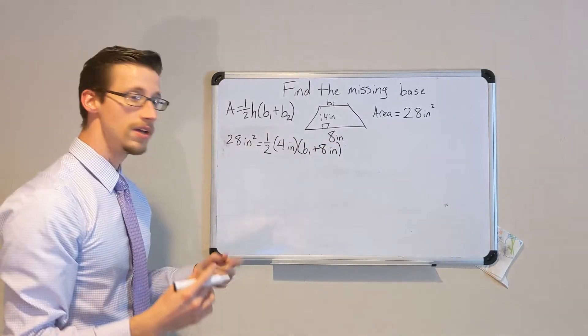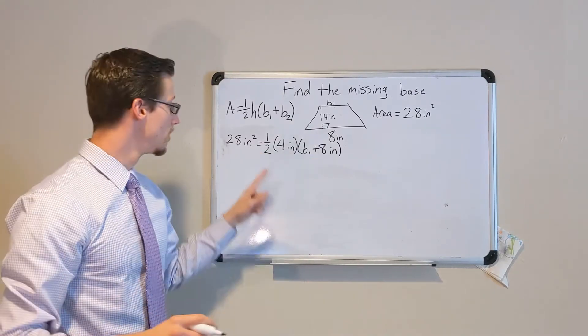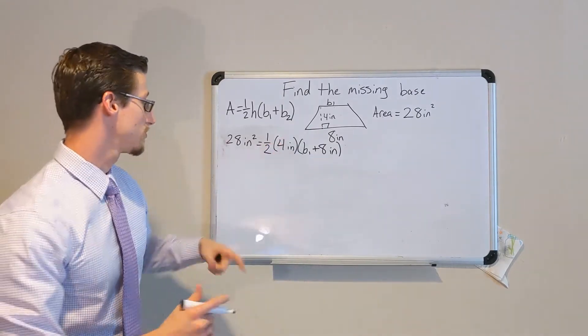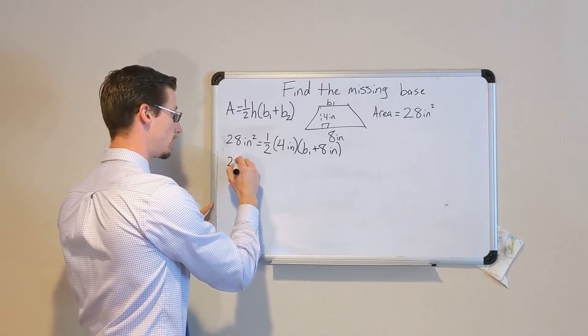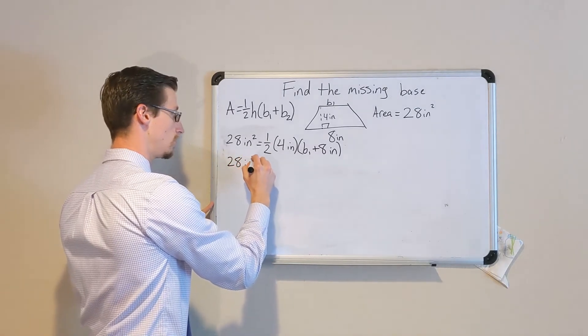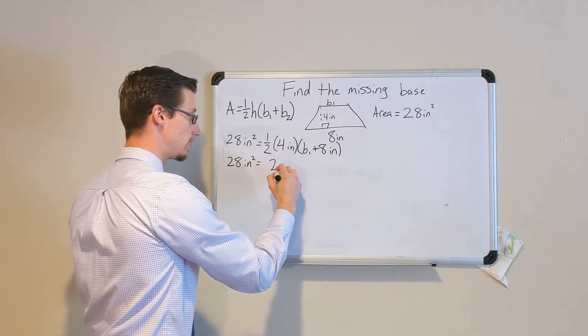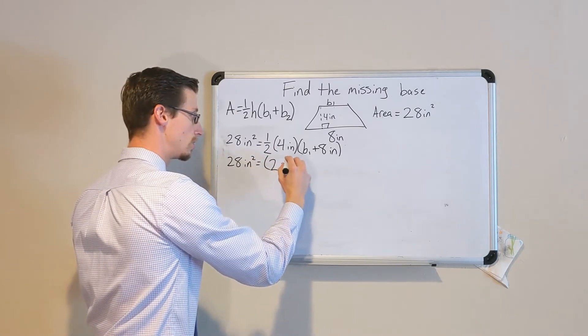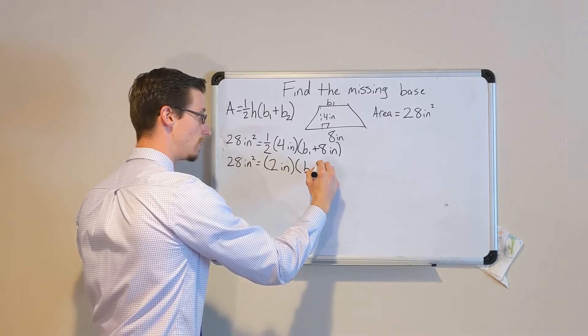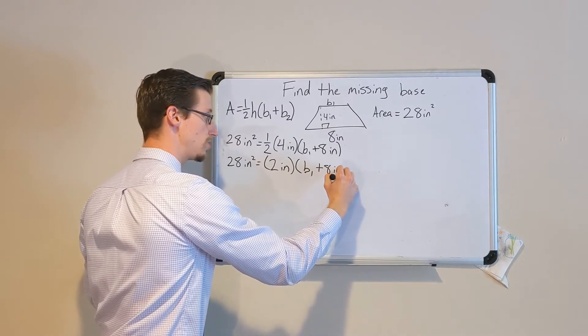All right, now we evaluate this side as far as we can. So we multiply one half times 4 inches. Fill in what doesn't change. Half of 4 inches is 2 inches times base 1 plus 8 inches.